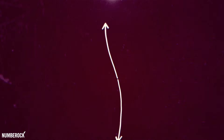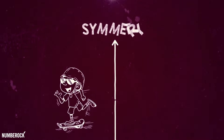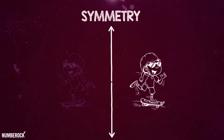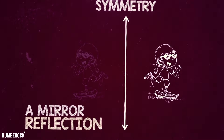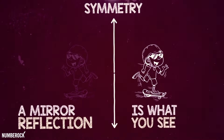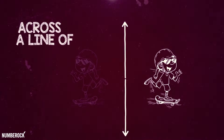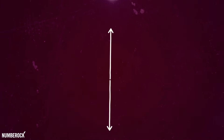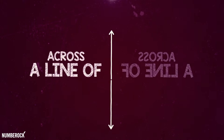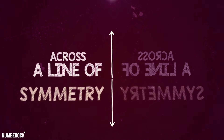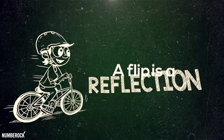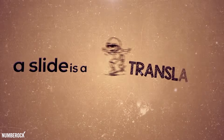Let's talk about symmetry. Flip the shape, but the first one stays. A mirror reflection is what you see — across a line of symmetry. A flip is a reflection, a slide is a translation, a turn is a rotation.